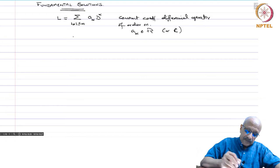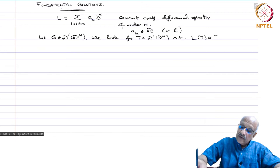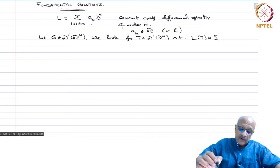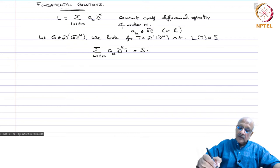Let s belong to D′(ℝⁿ) and we look for t in D′(ℝⁿ) such that L(t) = s. Since it is constant coefficient, this is well defined because D^α t is well defined. That means the sum over |α| ≤ m of a_α D^α t equals s. These are called distribution solutions of this differential equation.